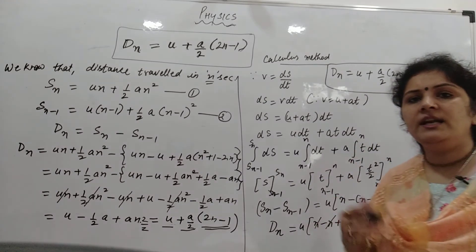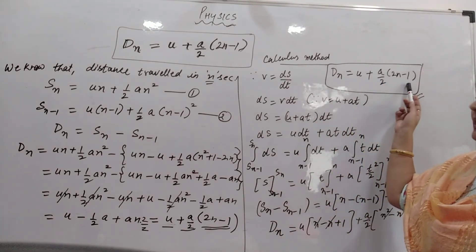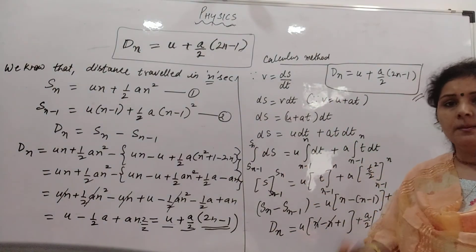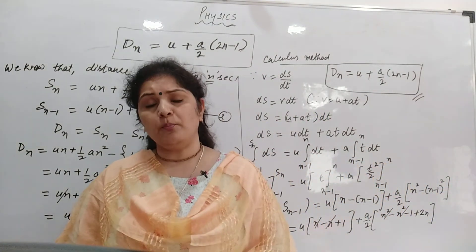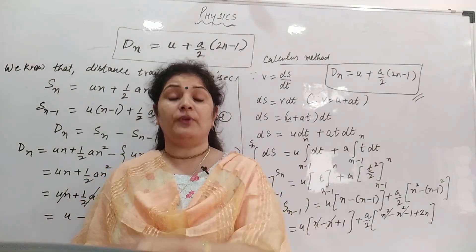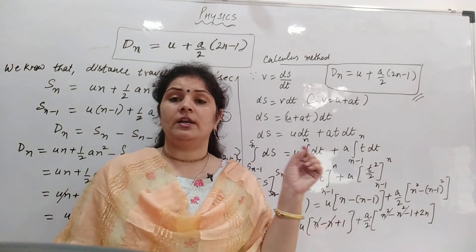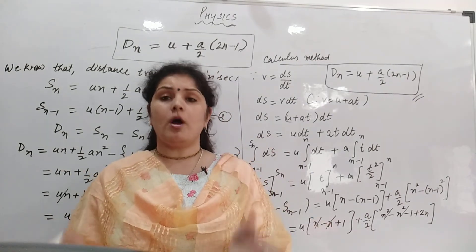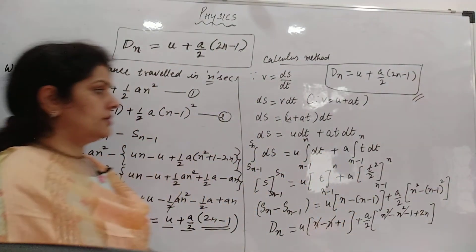So the distance travelled in the nth second is given by u + a/2 × (2n − 1), whether you solve it by the calculus method or by the simple mathematical subtraction method. This is very important when solving numericals — for example, a body covers 20 meters in the 5th second and 26 meters in the 9th second, calculate the distance in the 8.5th second. We can form two equations, find u and a, and solve the numerical. I hope you understood this.